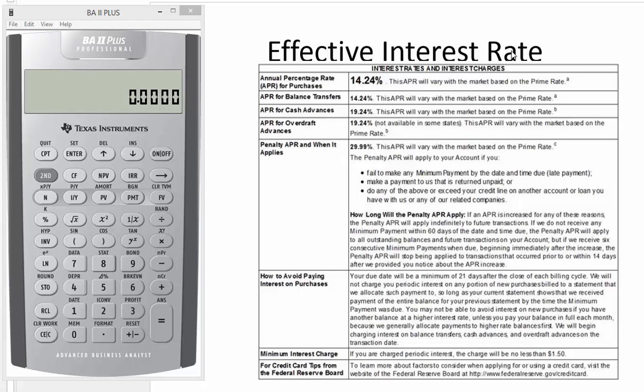Suppose you received in the mail an offer to get this new credit card and the credit card promises you 14.24% APR.